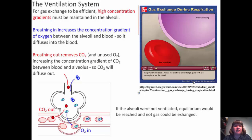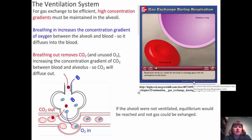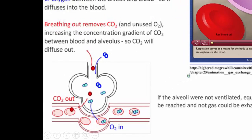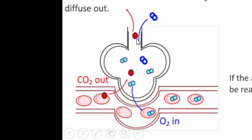For gas exchange to be efficient, we need high concentration gradients, which are maintained within the alveoli. Breathing in increases the concentration gradient of oxygen between the alveoli and the blood, so oxygen diffuses into the blood. Breathing out removes carbon dioxide and unused oxygen, increasing the gradient of carbon dioxide between the blood and the alveoli, so carbon dioxide diffuses out. The oxygen molecules move into the blood cells and carbon dioxide moves out.